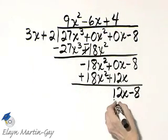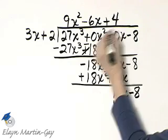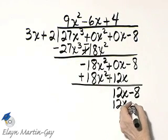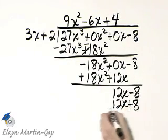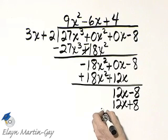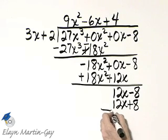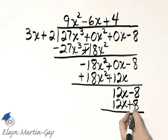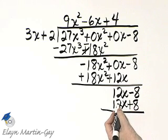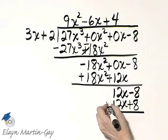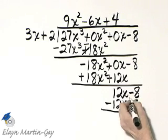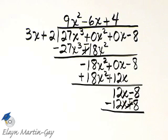4 times 3x is 12x, like we want. 4 times 2, that's a positive 8. Now be very, very careful here. Draw your line, and then you change signs of each term, because remember, we are subtracting. This becomes minus, and this becomes minus. So 12x minus 12x is 0, but negative 8 minus 8, that is negative 16. So watch for that mistake there.